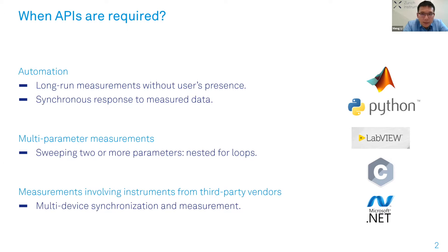As the team's demonstration showed, we have a very nice graphical user interface in Lab One, and with it we can do many different applications including sweeping voltage, offset, and frequency. However, there are cases where you want to automate your entire measurement, sweep different parameters, or use the MFIA together with a third-party instrument. All three conditions apply to DLTS - remember, the temperature can take quite long and is controlled by a third-party temperature controller, so the API is really helpful in this application.